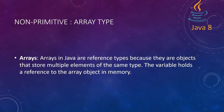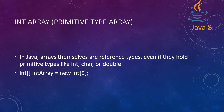So what is an int array? Arrays themselves are reference types even if they hold primitive types like int, char, and double. What differs when they come under reference type is they do not come as individual elements — they come as a group of similar elements.